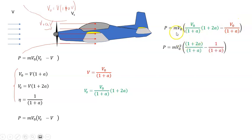minus V₀/(1 + a). We can take V₀ out and this becomes V₀², and we now have (1 + 2a - 1)/(1 + a), so